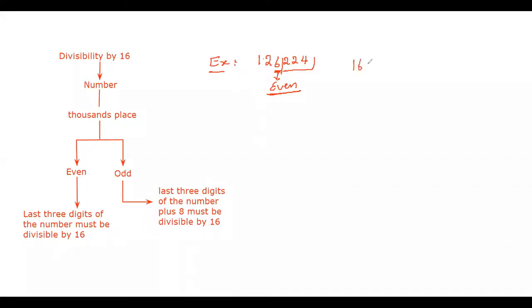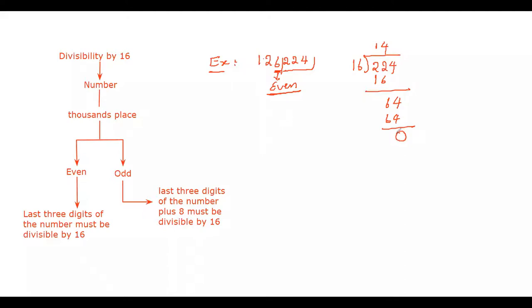We will check if 224 is divisible by 16. 16 times 14 equals 224, so the remainder is 0. Therefore 224 is divisible by 16, which means the entire number 126224 is also divisible by 16.